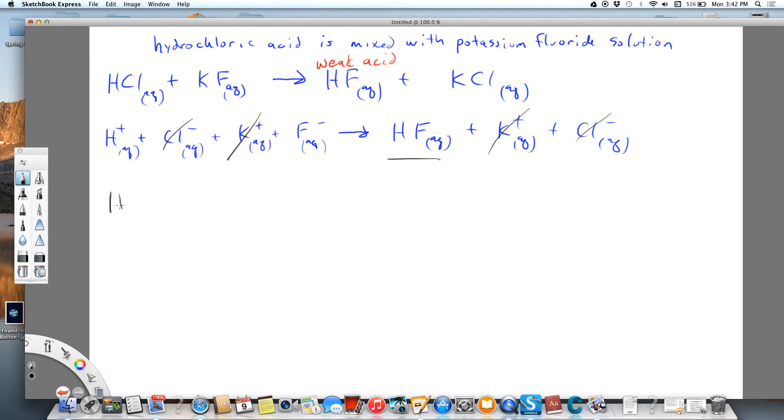So for our net ionic equation, we're going to write what we have that didn't get crossed off, and we have ions going to molecules.